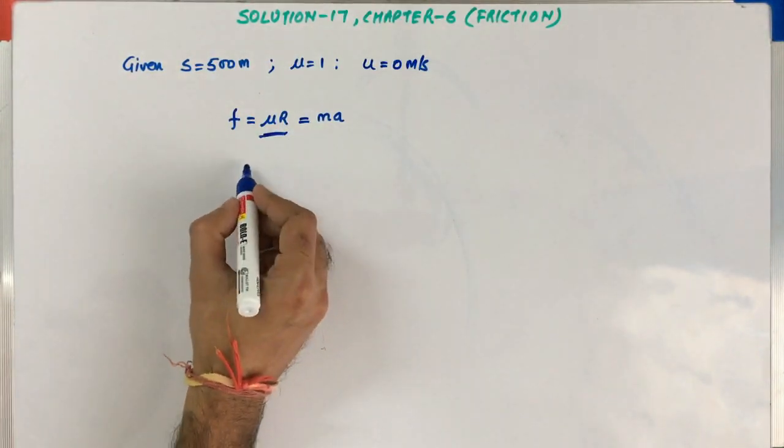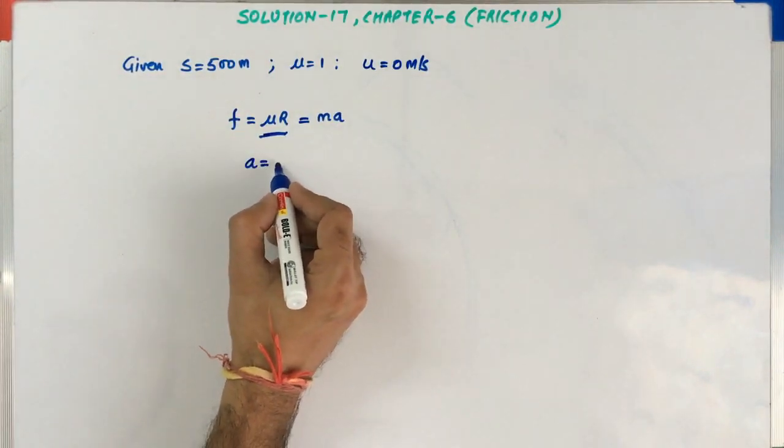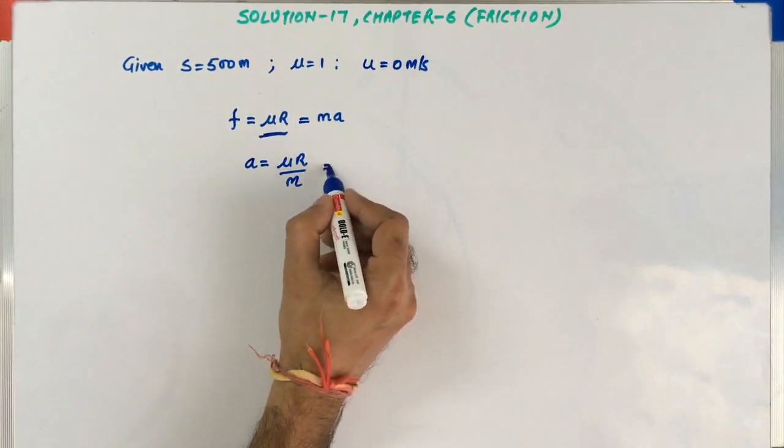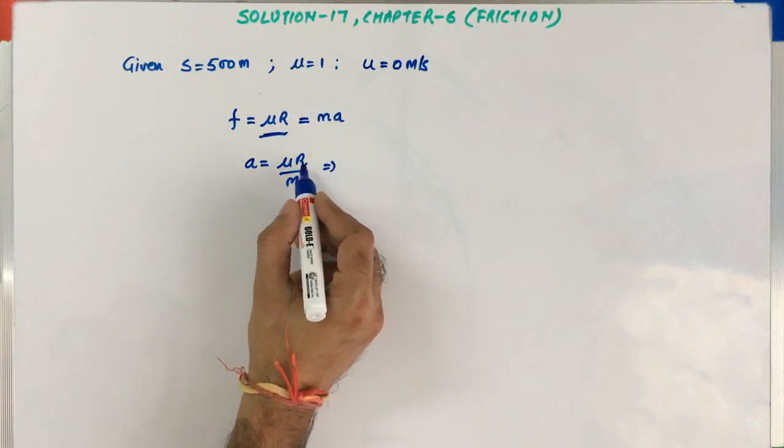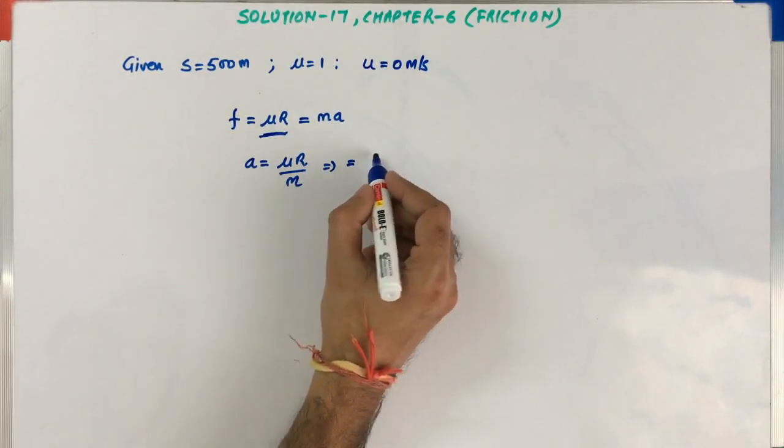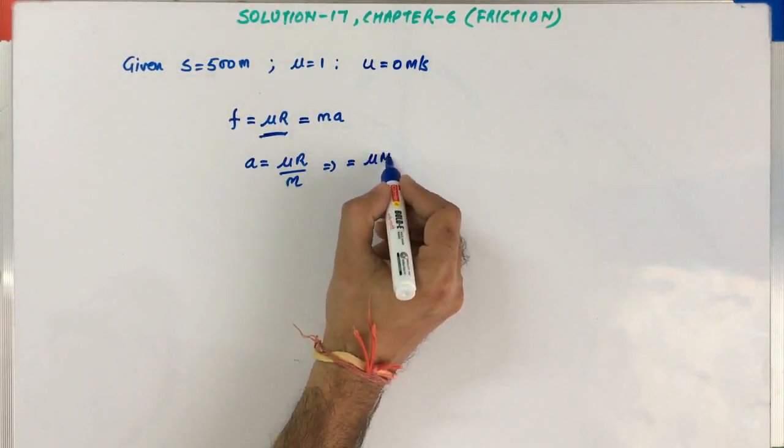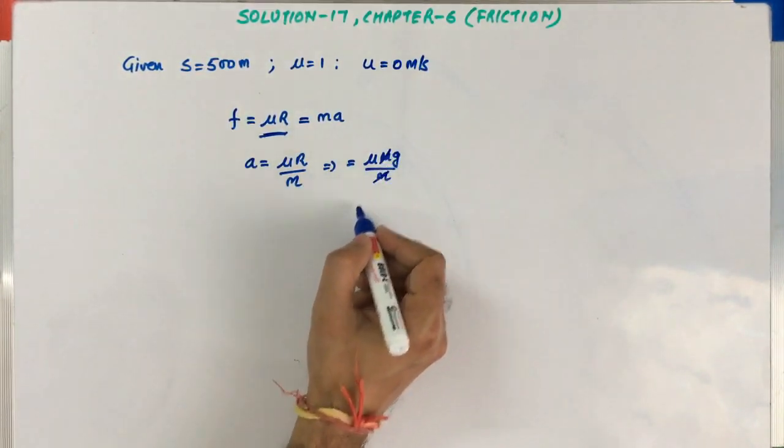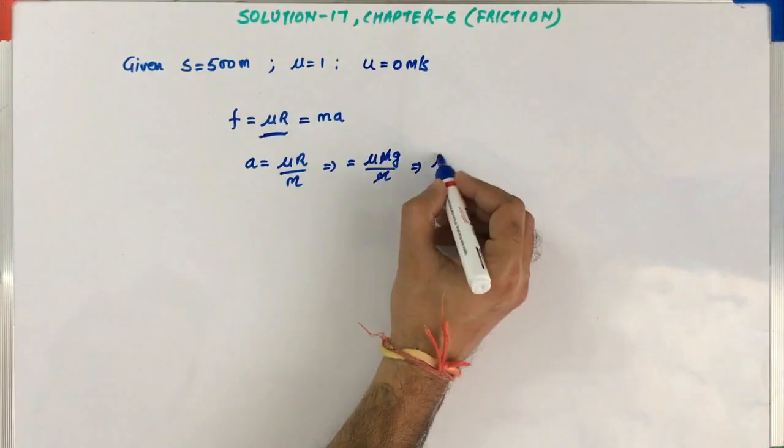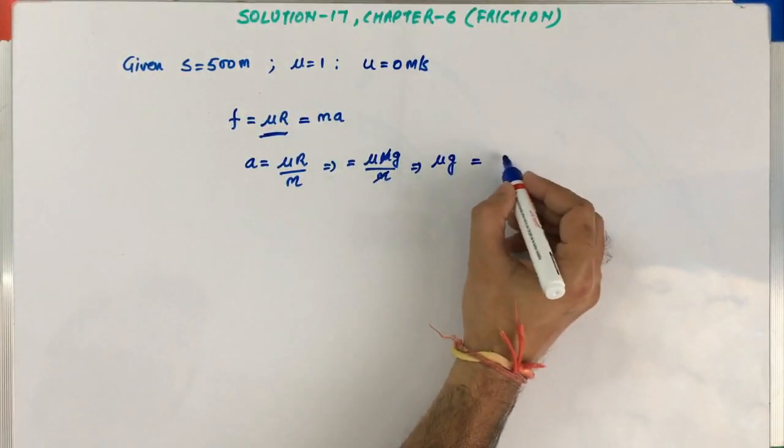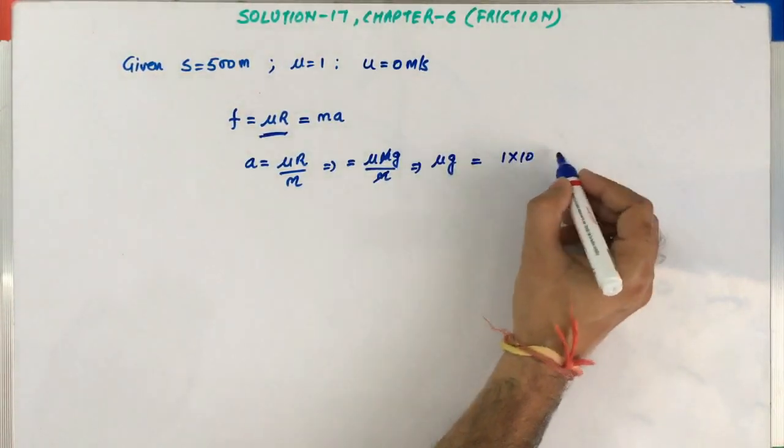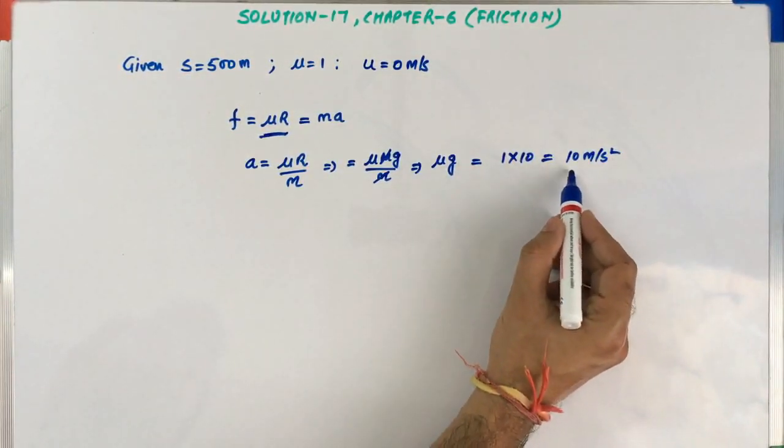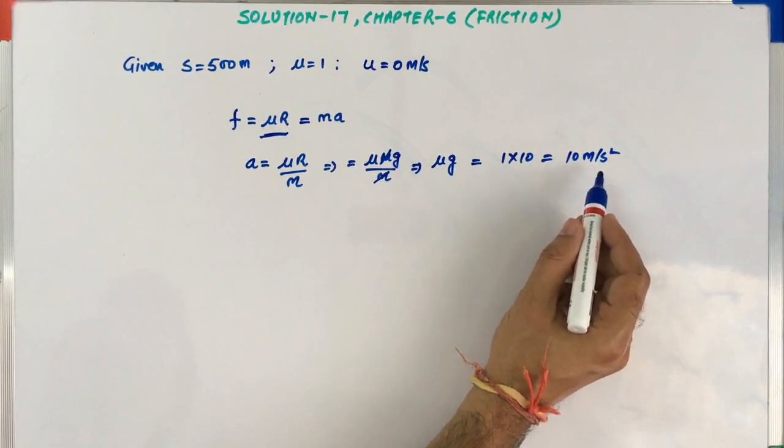So we can equate it as acceleration equals μN/m. We also know that N is nothing but mg where m is the mass of the car. So putting the value of N: μmg/m. This m will cancel out, so it is μg. Now putting the value of μ and g: μ is 1, g is taken as 10, so it is going to be 10 meter per second square. So this is the maximum acceleration that the car can attain.